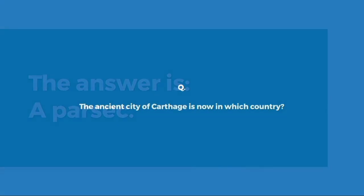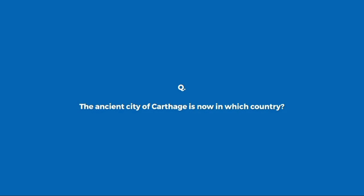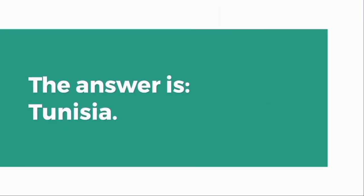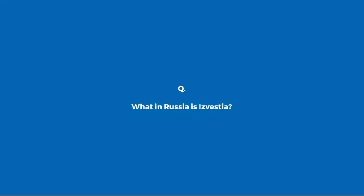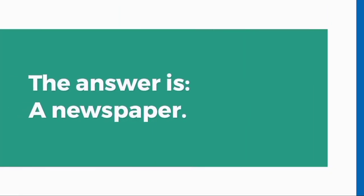The ancient city of Carthage is now in which country? Tunisia. What in Russia is Izvestia? A newspaper.